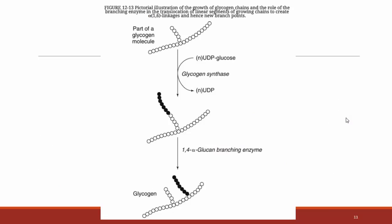Here is a textbook illustration of glycogenesis. We have part of a glycogen molecule and our UDP-glucose from the earlier reactions. Glycogen synthase adds glucose molecules one at a time in alpha-1,4 linkages, making the branch longer and longer. The UDP is released. When the branch gets really long, our body uses the branching enzyme, which transfers an oligosaccharide segment onto a different part of the glucose chain to introduce a new branch.